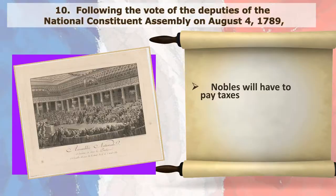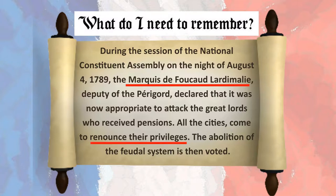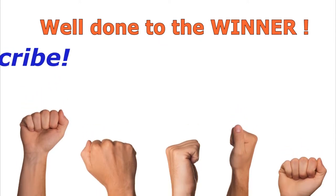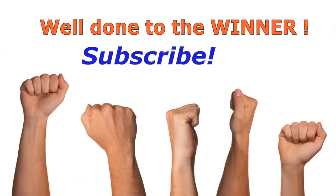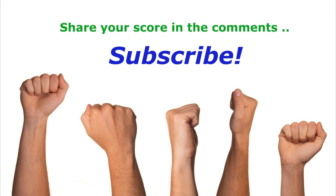Following the vote of the deputies of the National Constituent Assembly on August 4th, 1789, nobles would have to pay taxes. During the session on the night of August 4th, 1789, the Marquis de Foucault Artemeli, deputy of the Périgord, declared that it was now appropriate to attack the great lords who received pensions. All the cities came to renounce their privileges, and the abolition of the feudal system was then voted. My quiz — share your score in the comments.